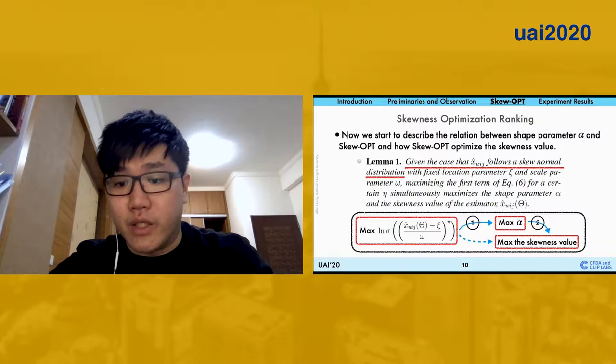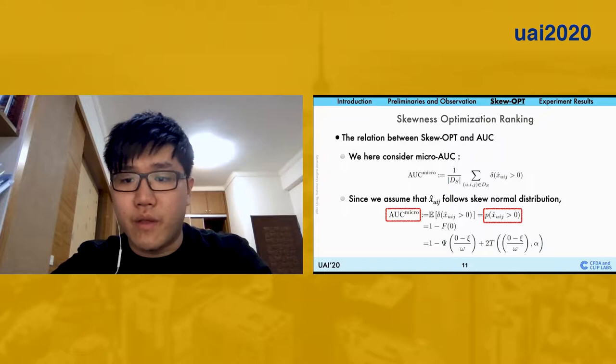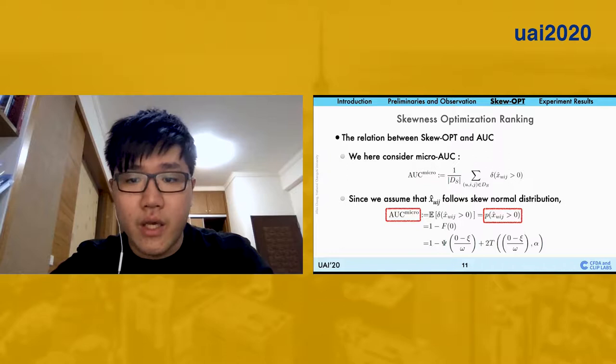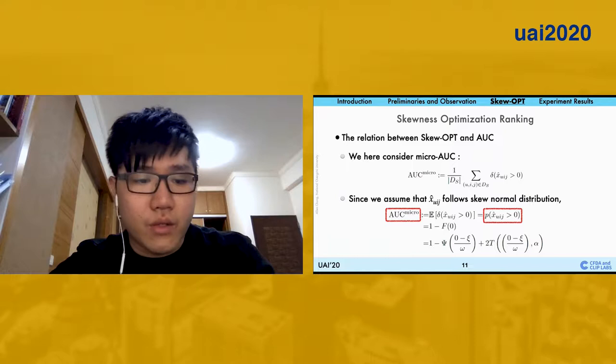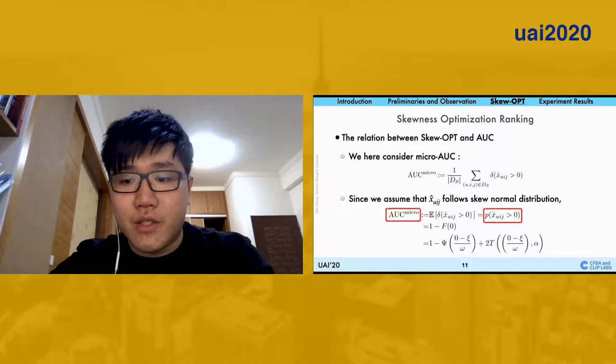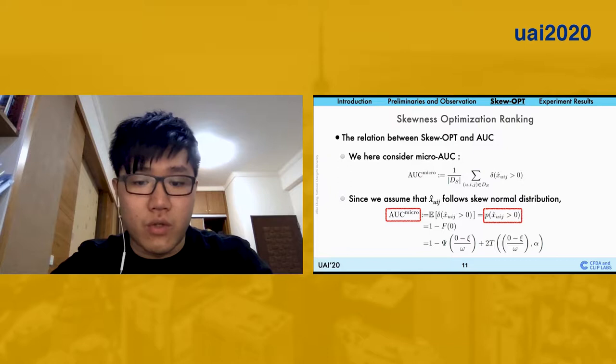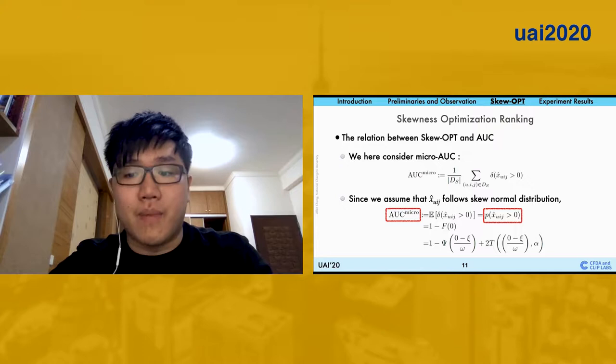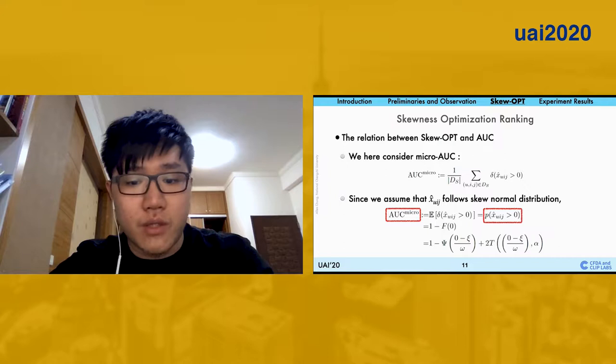The other important thing that is related to this ranking result is AUC. Here we take micro AUC as an example. According to the definitions of the micro AUCs, it can be derived to the probabilities of X_UIJ. By lemma 1, skewness optimizations can maximize the skewness values, and this also refers to that while we're maximizing skewness optimizations, it's simultaneously maximizing this AUC.